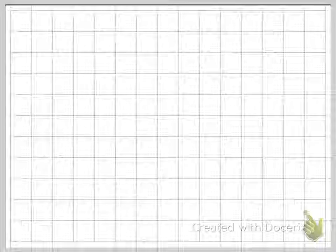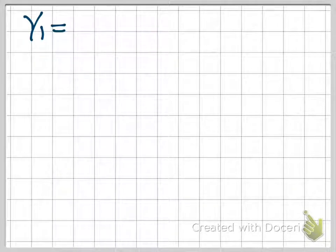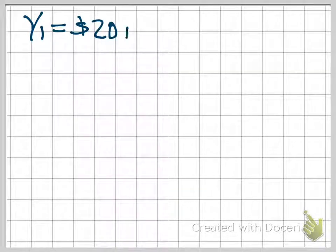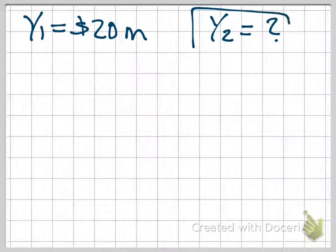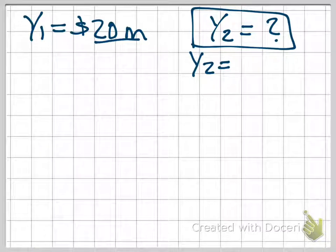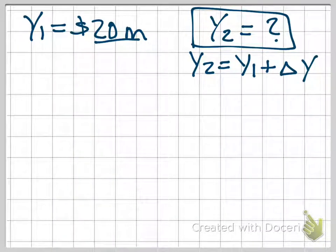And then we're asked to find what real GDP demanded, Y, will increase to if investment spending by firms, so this is the first kind of spending change we're going to look at in this chapter, investment spending increases by $2 million. So I suggest starting out by writing down everything that we know. So we know that real GDP is currently $20 million. What are we trying to find? We're trying to find what real GDP demanded is now, after this increase in investment spending. How are we going to get to Y2? It'll simply be what real GDP is now, plus that change in real GDP demanded that is brought about by that increase in spending.